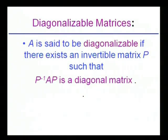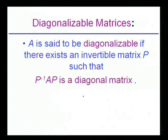A matrix A is said to be diagonalizable if there exists an invertible matrix P such that P⁻¹AP is a diagonal matrix. A diagonal matrix is one in which the diagonal elements are non-zero and all other elements above and below the diagonal are zero.